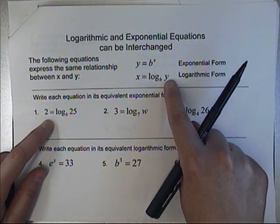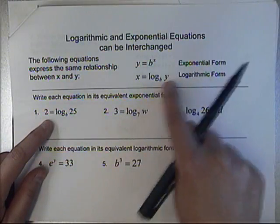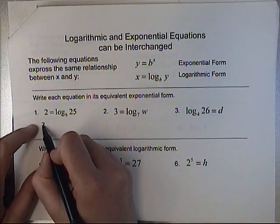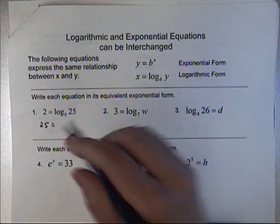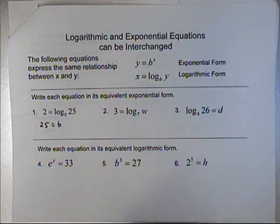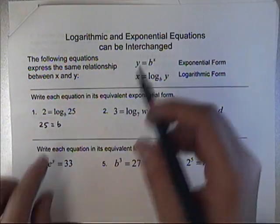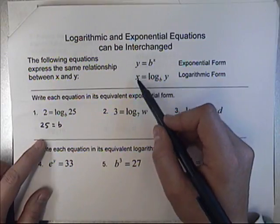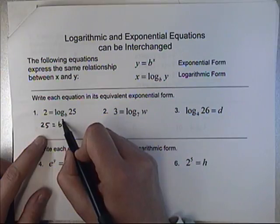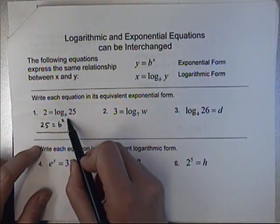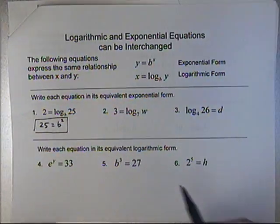So if we want to write this in exponential form, this 25 would go in the solution position. The base is b, so that would go here. And our x value that used to be here is now up here, so that's 2. So this is that same equation in exponential form.